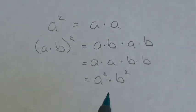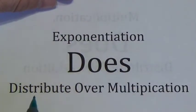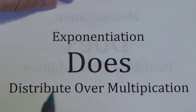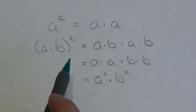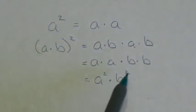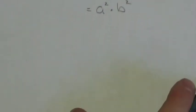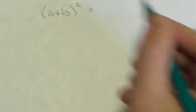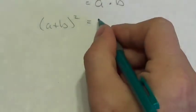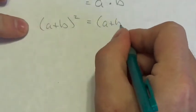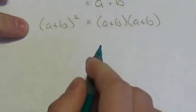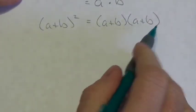And so, what we're seeing here is another rule that you saw a while ago: exponentiation does distribute over multiplication. That square distributed to both of those factors. Now, let's take a look at another example. Let's say that you've got A plus B squared. Well, we know that that means I've got A plus B as a factor twice, so it's A plus B multiplied by A plus B.